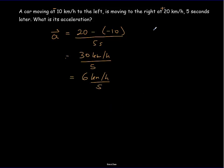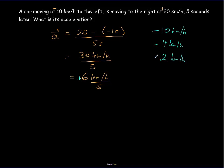It started with a speed of 10 km/h to the left. We add 6 km/h to the right every second. So −10 plus 6 gives −4: it would be going left at 4 km/h one second later. Another second later, it reverses direction and is going 2 km/h to the right. Then 8, then 14, and finally 20 km/h to the right — it keeps speeding up to the right.